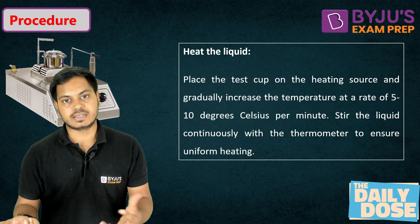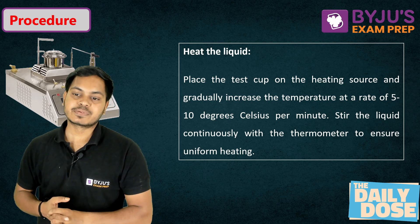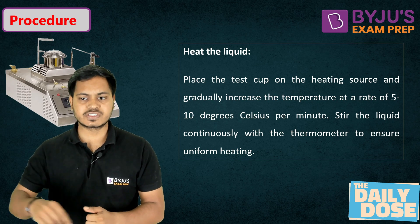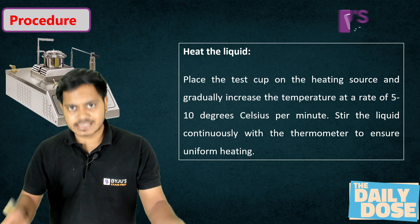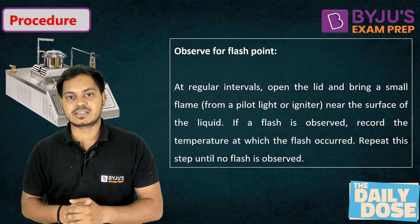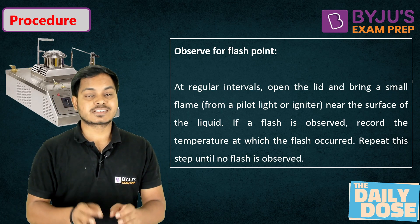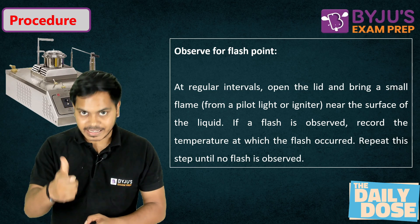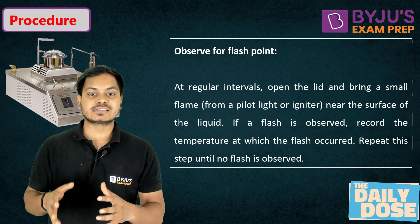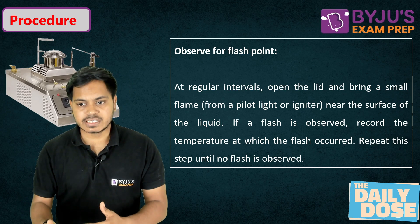Gradually increase the temperature at a rate of 5 to 10°C per minute, and continuously stir the liquid to ensure uniform heating. As soon as vapors start coming out, bring the ignition source in contact with the vapors. When the vapors start catching fire in the form of flashes, note the temperature of the bitumen — that temperature is called the flash point.